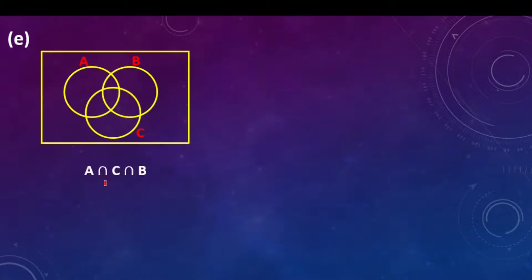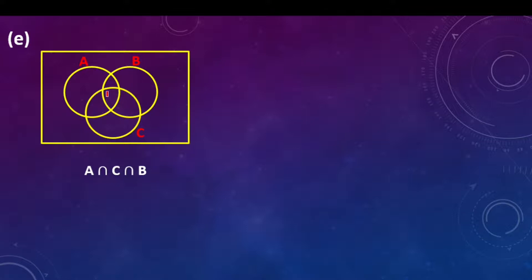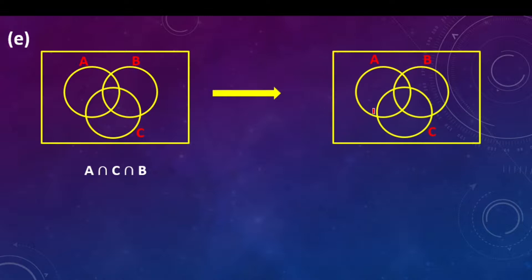Part E says A intersection C intersection B. The members that are in A are also in C, so they are found here, and they also have to be in B. So the members in A, also in C, also in B, are supposed to be just in the centre region. Because the other regions represent A and C only, A and B only, or B and C only. Those members in all three — A, C and B — are supposed to be right here.